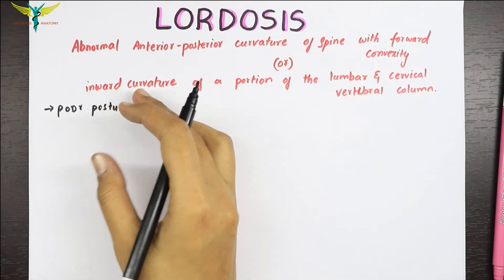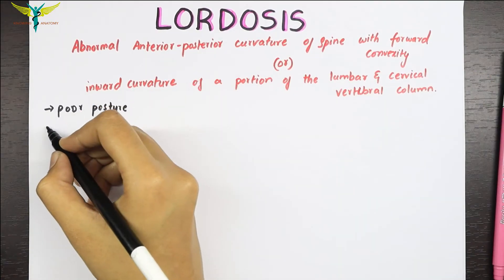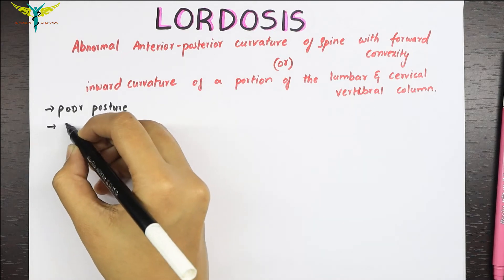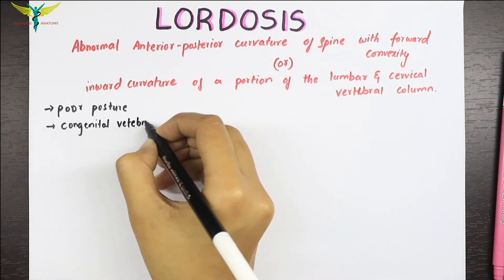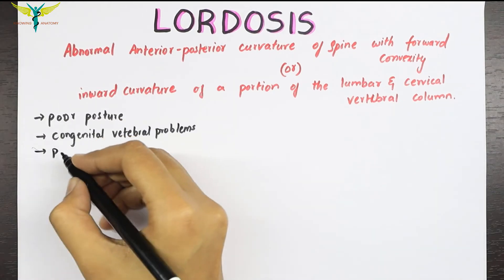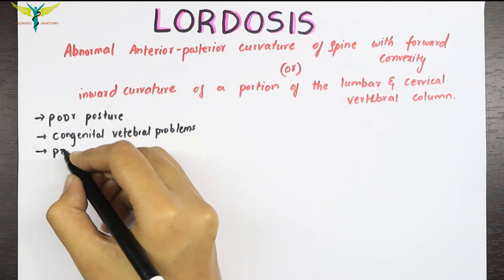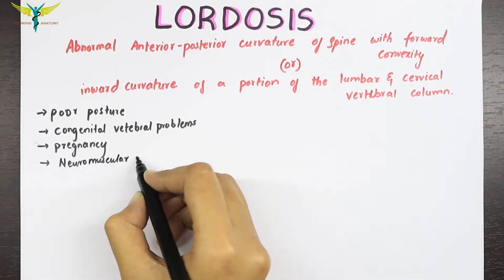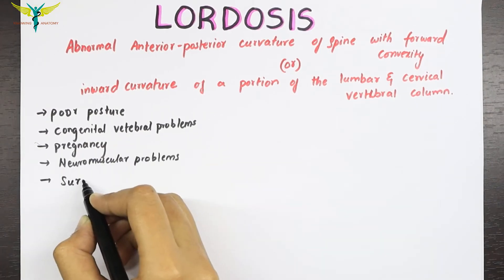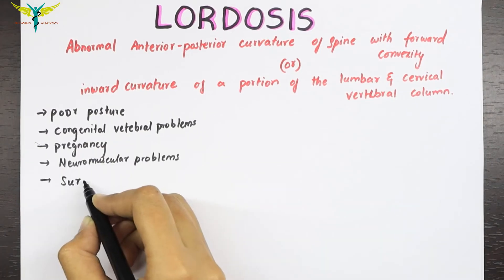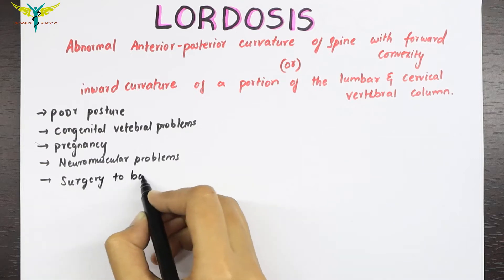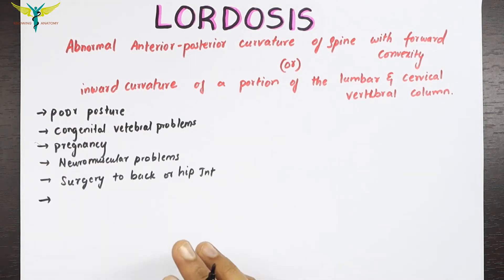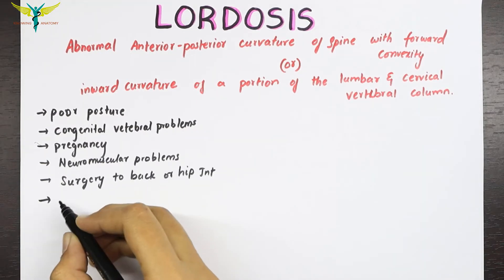Lordosis can be seen in poor posture, congenital vertebral problems, physiologically in pregnancy, neuromuscular problems, surgery to the back or the hip joint, and in children, rickets may also lead to lordosis.